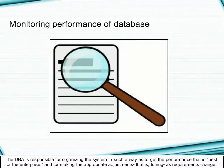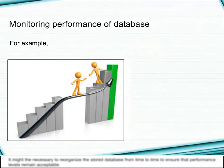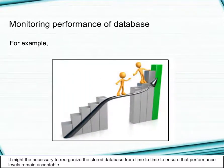Monitoring performance of the database: The DBA is responsible for organizing the system to get the best performance for the enterprise and for making appropriate adjustments — that is, tuning — as requirements change. For example, it might be necessary to reorganize the stored database from time to time to ensure that performance levels remain acceptable.